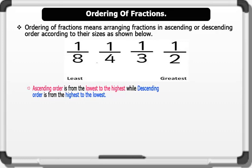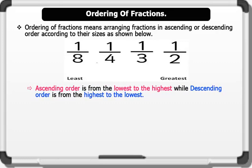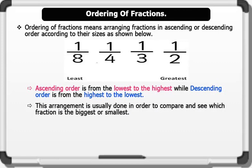Ascending order is from the lowest to the highest, while descending order is from the highest to the lowest. This arrangement is usually done in order to compare and see which fraction is the biggest or smallest. To achieve this, we do the following.